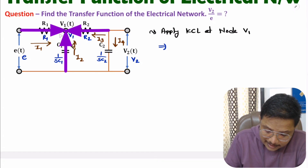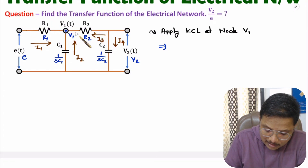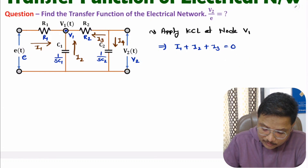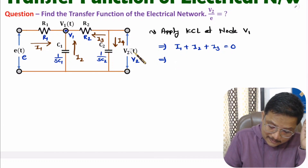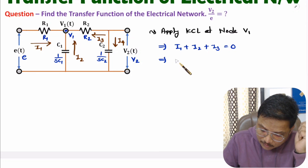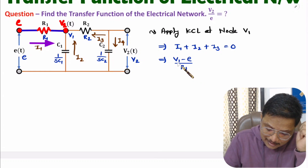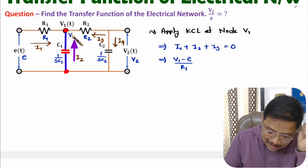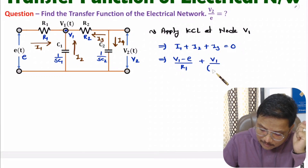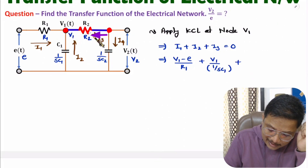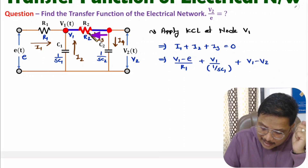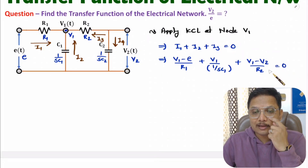At node V1, entering current equals leaving current. I1, I2, and I3 are all entering, so I1 + I2 + I3 = 0. Now substituting: I1 is head minus tail = (V1 - E)/R1; I2 is head minus tail = (V1 - 0) divided by impedance of C1, which is 1/sC1; and I3 is head minus tail = (V1 - V2)/R2. That equals zero.